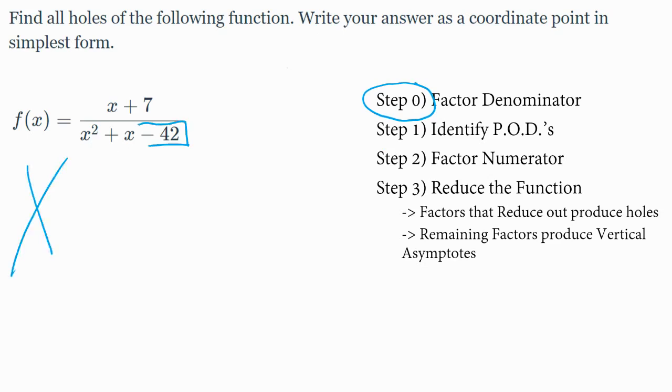We have negative 42 on the bottom and 1 as the a value on the bottom. So we have negative 42 as my a times c on the top of the x and a positive 1 on the bottom, which should give me the magic numbers of 7 and negative 6.